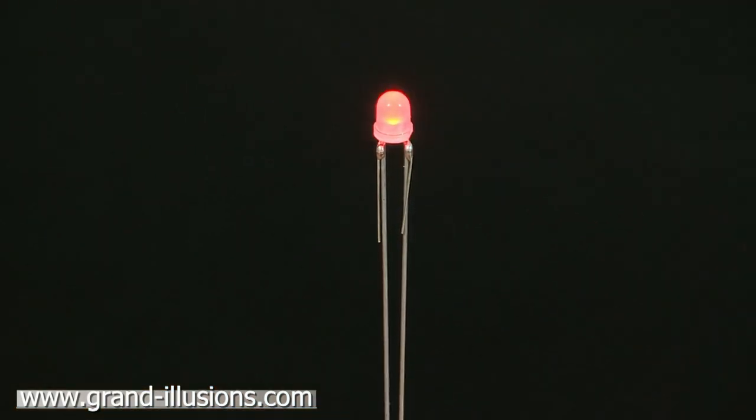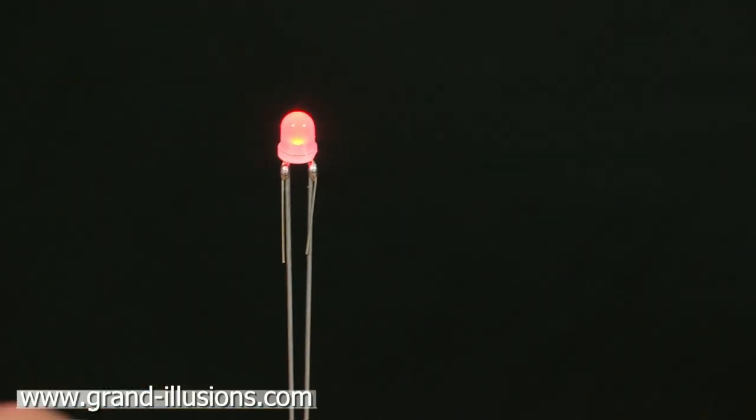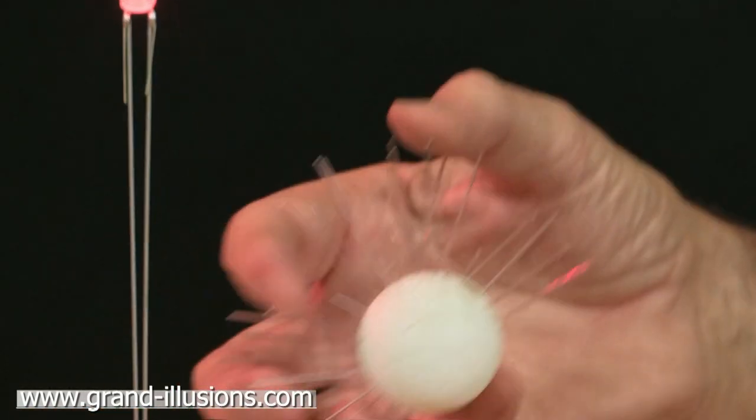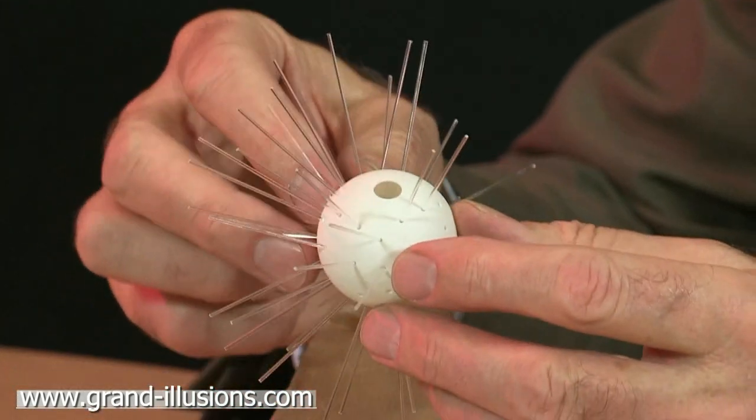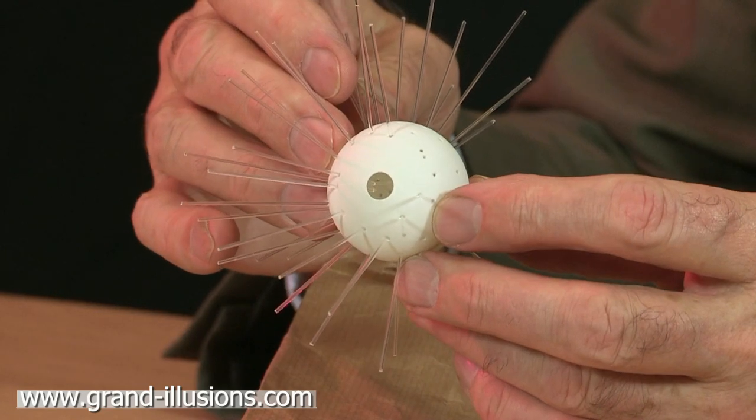And then what you're supposed to do is place something on top of it to make it look like a flower. What they provide is a ping-pong ball, would you believe. The ping-pong ball comes completely apart from the one hole there, completely apart from the hole where the LED goes.